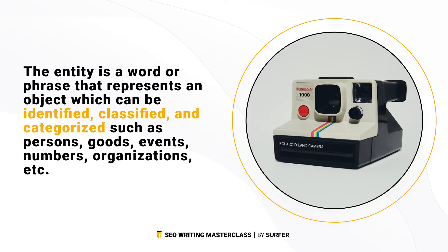An entity is a word or phrase that represents an object which can be identified, classified, and categorized — such as persons, goods, events, numbers, and organizations. For Google, Samsung is no longer a random word; it knows it's about phones. So if you randomly place the word Android in a text about baking vegan cookies, there's no way it'll rank in a SERP where people are searching for the best Android phones.